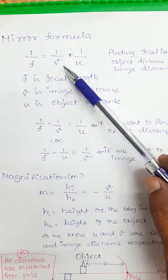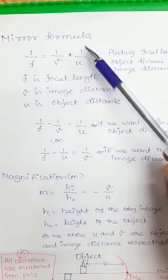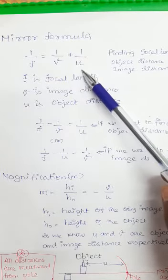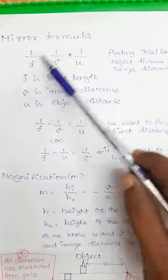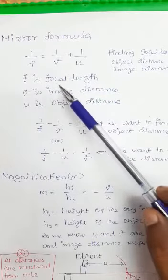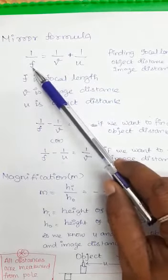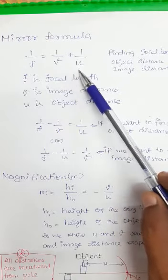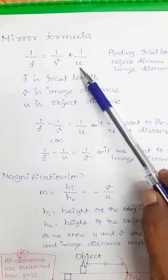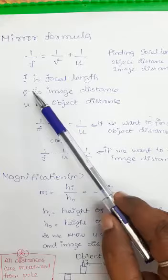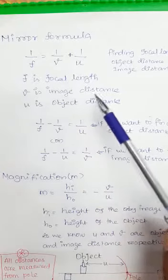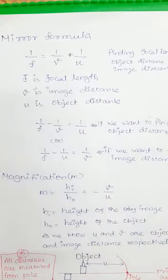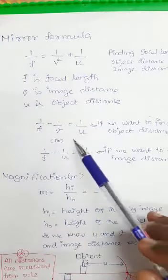1/f = 1/v + 1/u. From that formula we can calculate focal length, image distance, or object distance. Here f is focal length, v is the image distance, and u is the object distance.